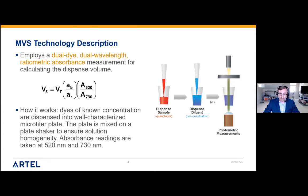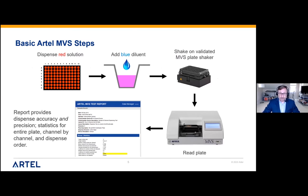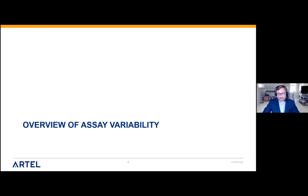This is where people will hear us talk about NIST traceable — a lot of work goes into preparing these reagents to make them NIST traceable. The basic process is: dispense your red solution into a plate, add your blue diluent, use the validated plate shaker, and get a readout and report. That report provides dispense accuracy and precision, which is what most people know us for. We can look at the entire plate channel by channel. But what we want to do is get people thinking more broadly about the assay process, extending this technology to evaluating different parts of the assay.